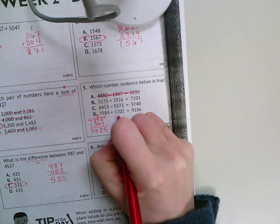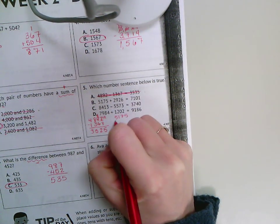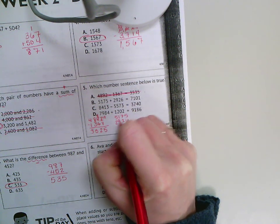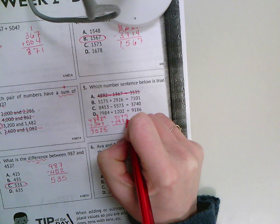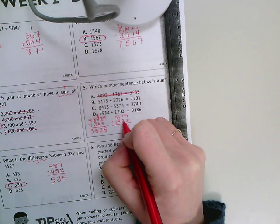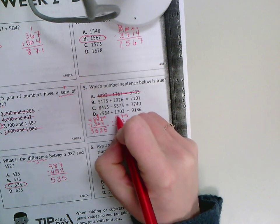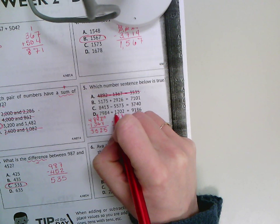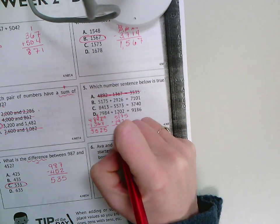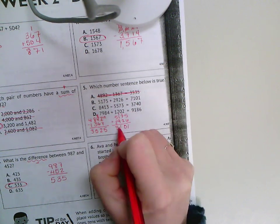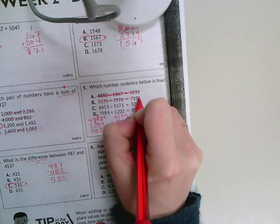Number, or letter B. 5,175 plus 2,926. 5 plus 6 is 11. 7 plus 2 is 9, plus 1 is 10. 9 plus 1 is 10, plus 1 is 11. 5 plus 2 is 7, plus 1 is 8. Once again, very close, but that thousands place is different so it can't be B.